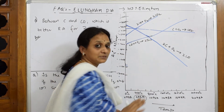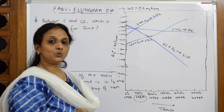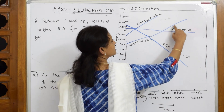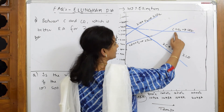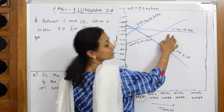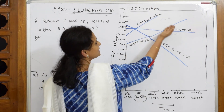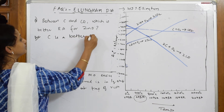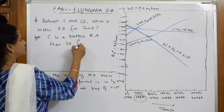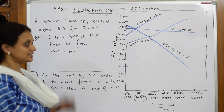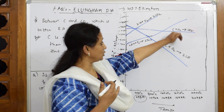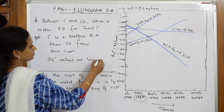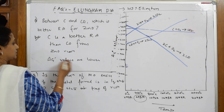Lower the Gibbs free energy, the stronger the reducing agent. The zinc oxide line goes above. Carbon line is lying below zinc, and carbon monoxide is lying above zinc. The one which is above cannot reduce it. So carbon is a better reducing agent than CO for zinc oxide reduction, because carbon's Gibbs free energy values are lower compared to zinc.